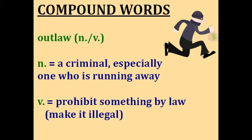Outlaw. The word outlaw has two different meanings — it can be a noun or a verb. As a noun, a person who is an outlaw is a criminal, usually one who is running from the police and trying to avoid being captured. As a verb, to outlaw means to prohibit something by law. For example, if your country outlaws talking on your cell phone while driving, that action is now illegal and you will be punished. So we have outlaw the person — a criminal — and outlaw the action — to make something illegal.